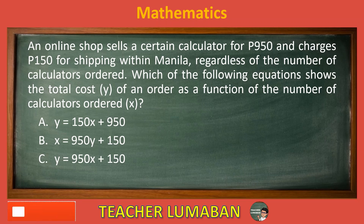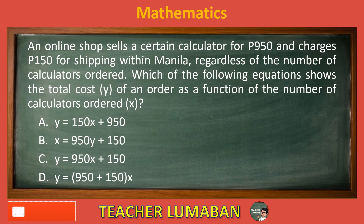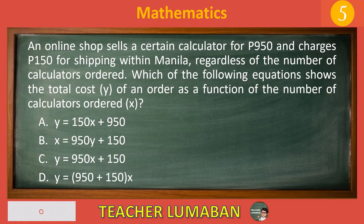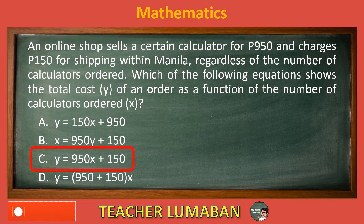Letter D: Y equals 950 divided by X. Choose the suitable answer based on the given choices in 5 seconds. The correct answer is Letter C: Y equals 950X plus 150.